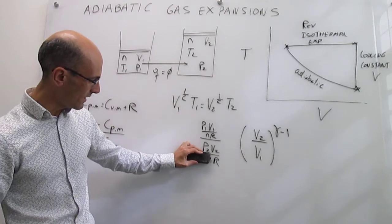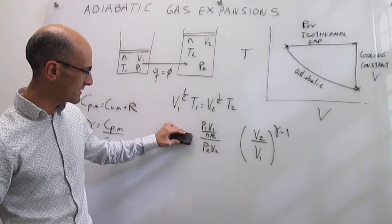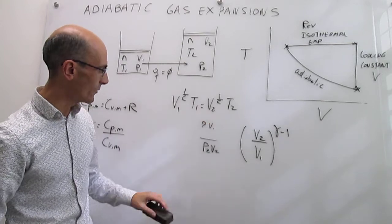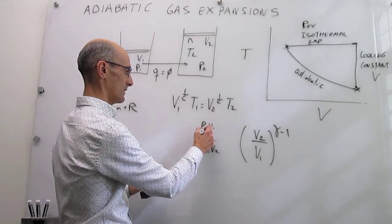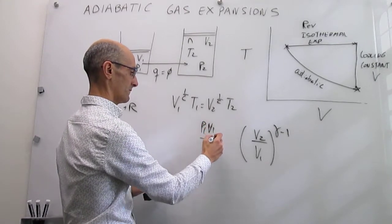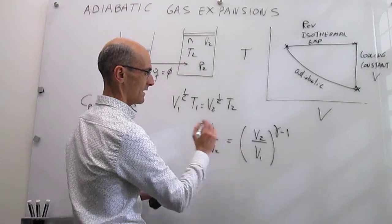We can erase that. Notice that those nR terms cancel as well, so we can erase them likewise. P1 V1. And that's your next expression.